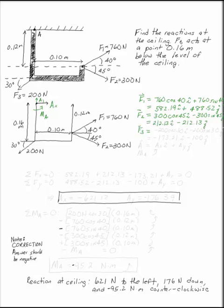F3 is going to be minus 200 cosine 30 in the i direction and minus 200 sine 30 in the j direction.